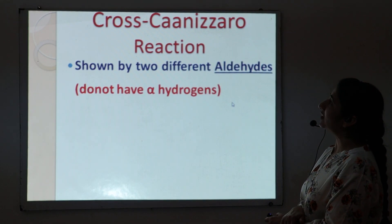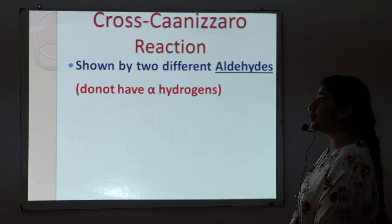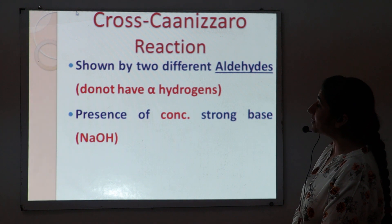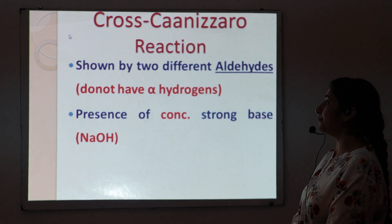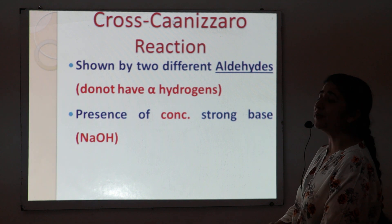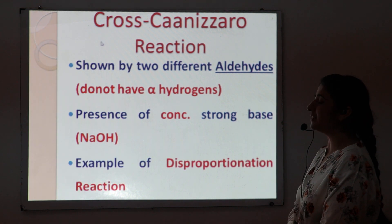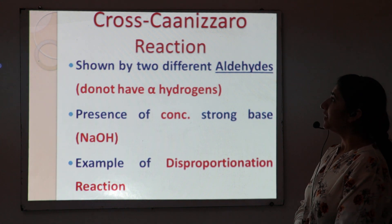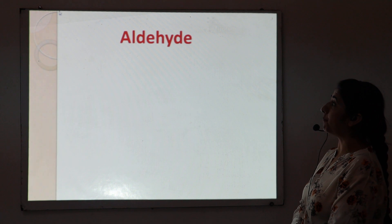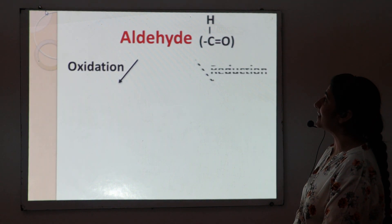The Cross Cannizzaro reaction is shown by two different aldehydes which don't have alpha hydrogen atoms. It takes place only in the presence of concentrated strong base sodium hydroxide, similar to the Cannizzaro reaction. It is also an example of a disproportionation reaction, meaning the aldehydes undergo both oxidation and reduction.